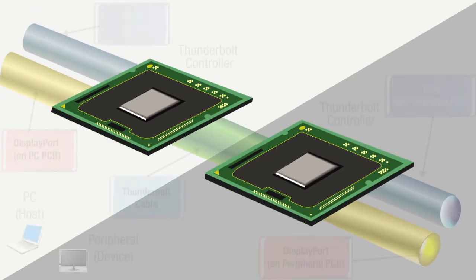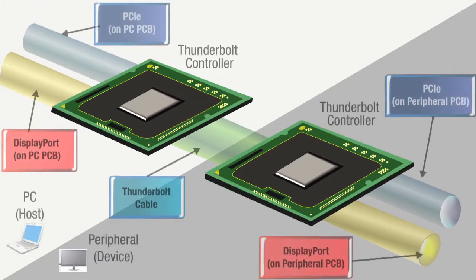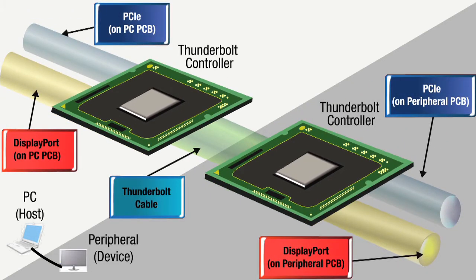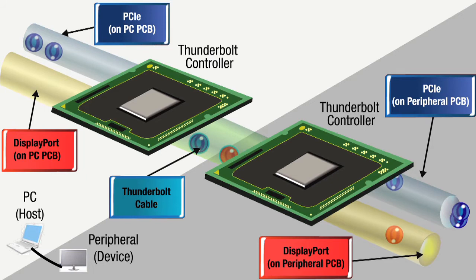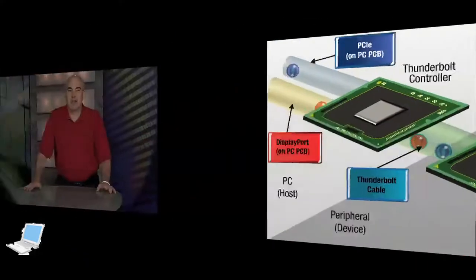This diagram, courtesy of Intel, provides a good summary of how Thunderbolt is implemented in the host computer system. The existing DisplayPort and PCI Express signals are input into the Thunderbolt controller where they are aggregated. This combined signal is then transmitted to the peripheral device. The Thunderbolt specification mandates that all cables be active to support the 10 gigabit per second data rates.